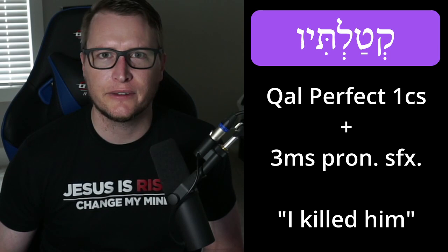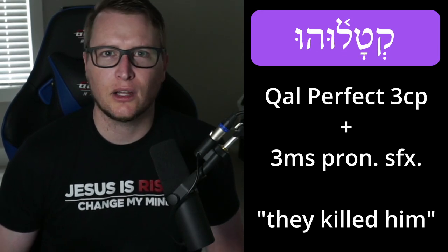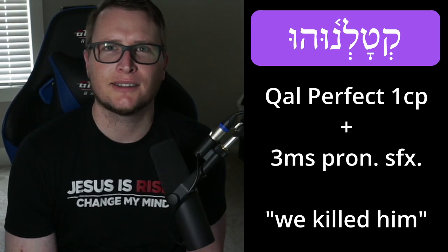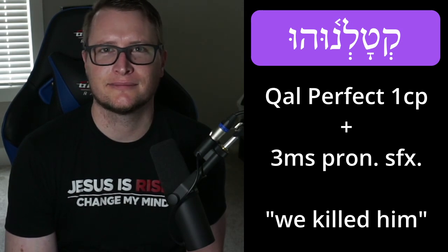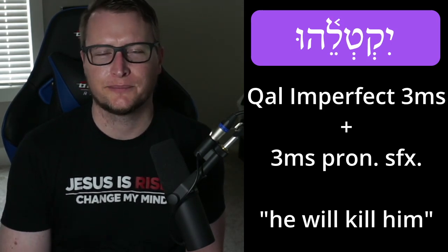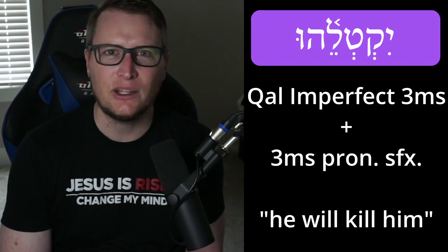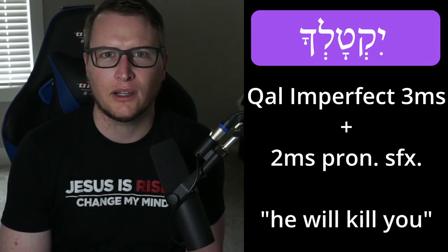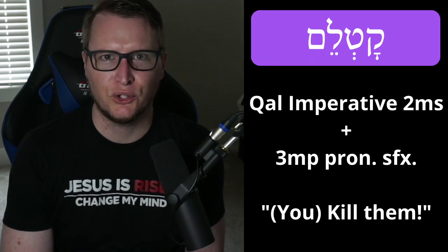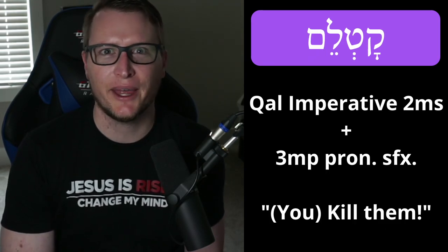Let's look at some examples: 'kitaltihu' — I killed him; 'kitalu hu' — they killed him; 'kitalnuhu' — we killed him; 'yiktalehu' — he will kill him; 'yiktalkha' — he will kill you; 'katlem' — you, kill them. So that is pronominal suffixes on verbs.